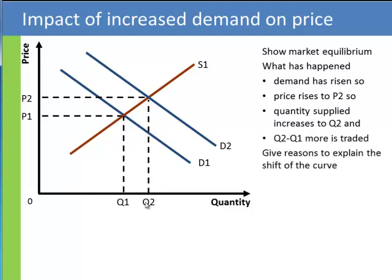Now, here's the question. Can you give reasons to explain why this demand curve shifted from D1 to D2? Here's some ideas. Could be that consumers have got more income, they've got more spending power, and they're using part of that to buy more of this product.